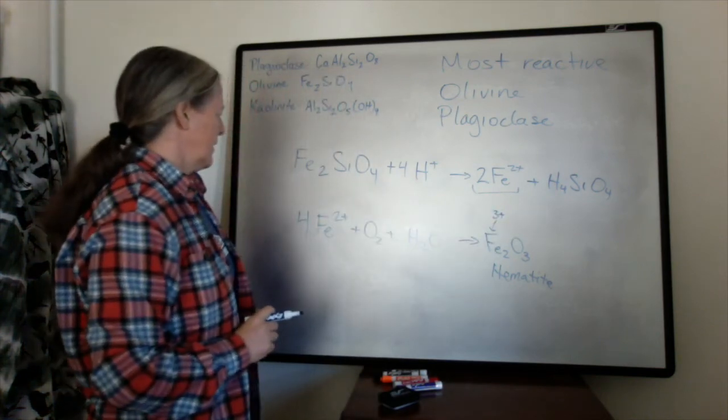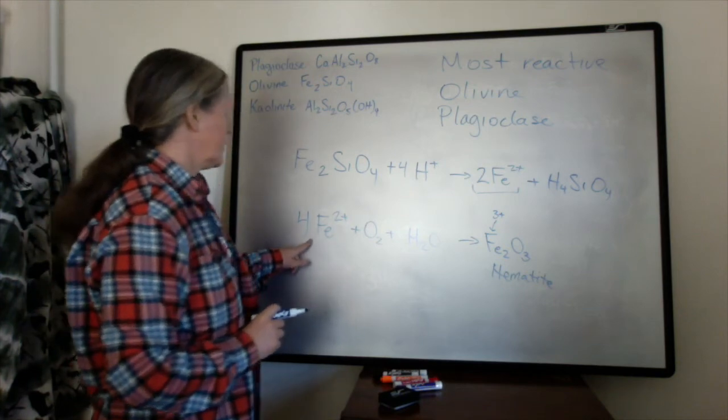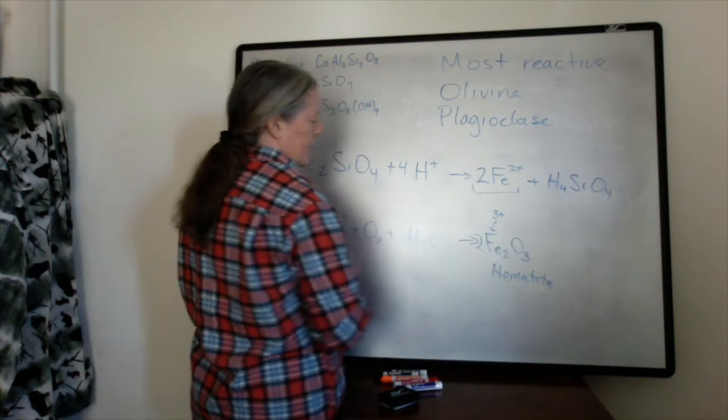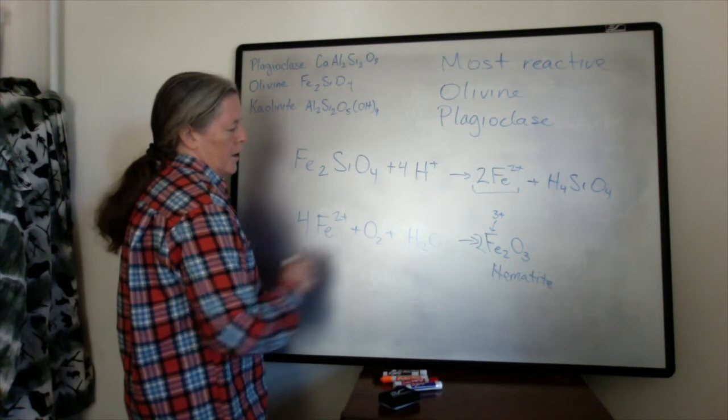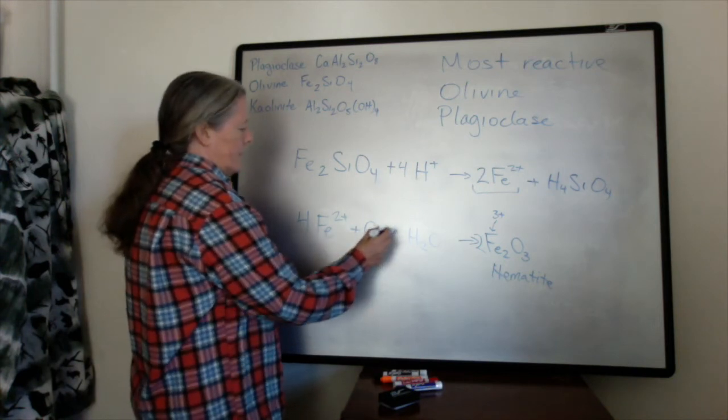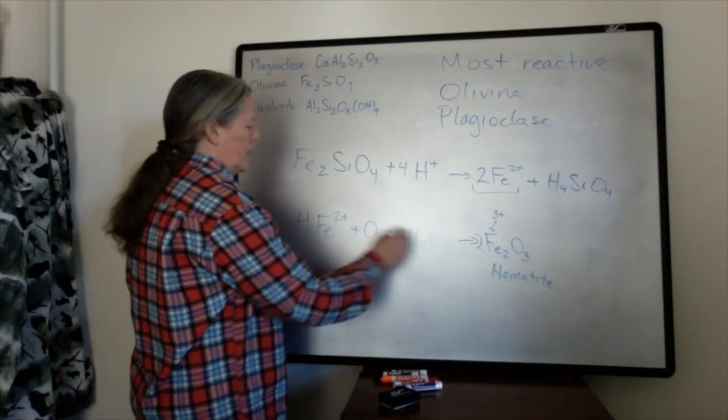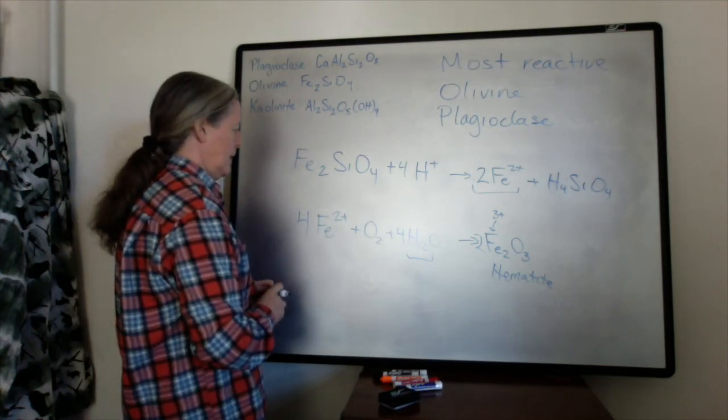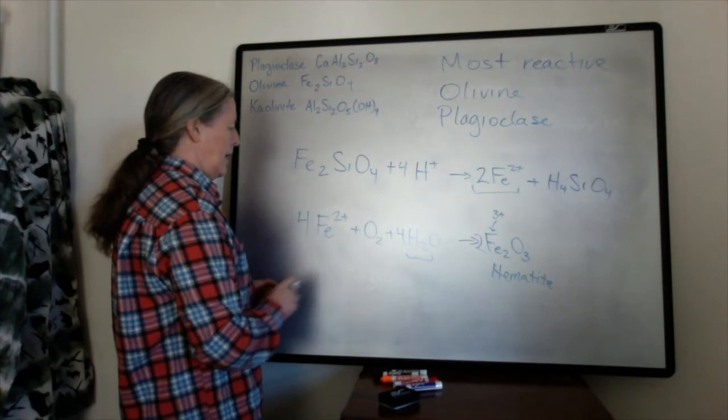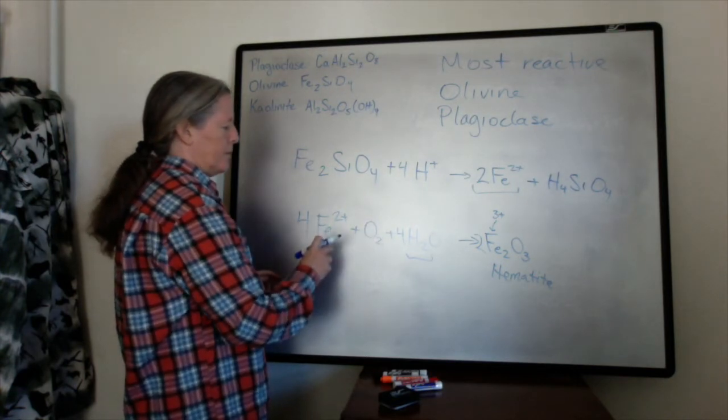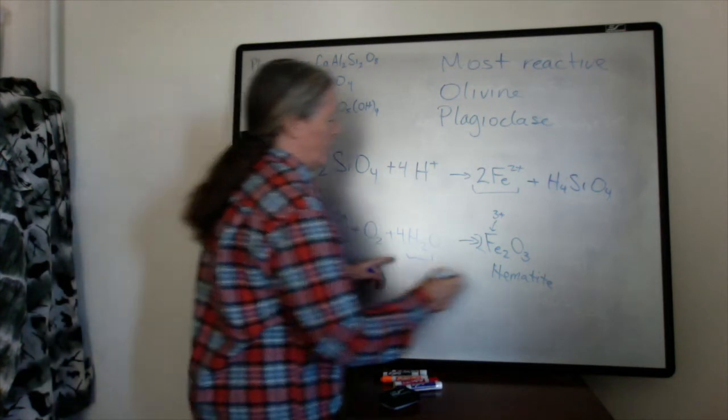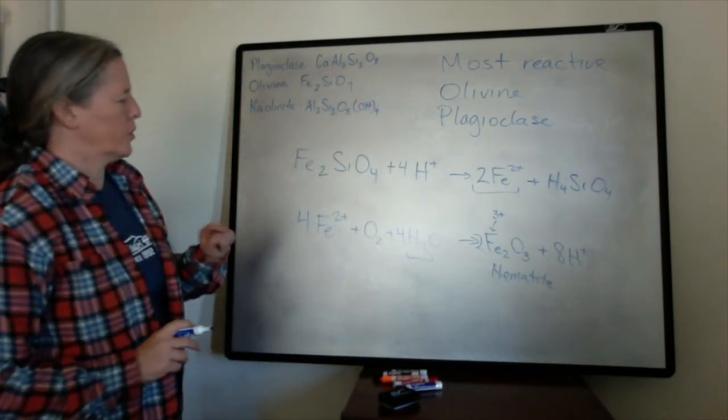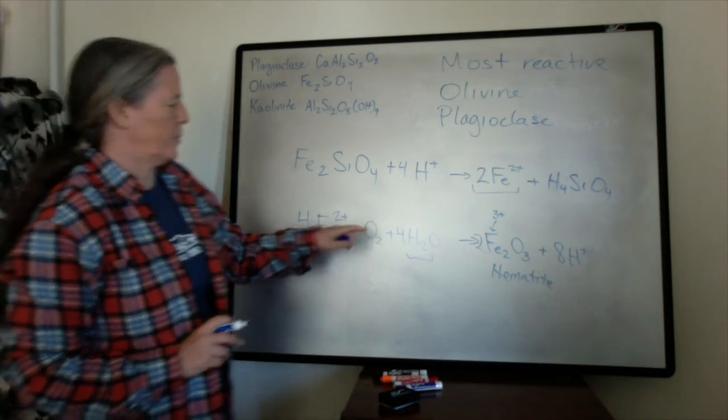And so this iron is in the 3 plus state. And so we actually there are two of them in each one. So I need a two here. And then that means that I have three or six oxygen. So I have two here and so I need four more here to get six oxygen. And that leaves me with eight protons. And I also need something to balance the charge. And so we end up with eight protons here. So we are charged balanced, we're oxidative state balanced, and we're element balanced.